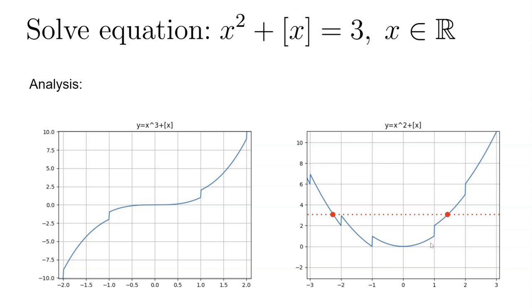But anyway, this graph gives us the idea that we cannot solve using the same method, just using a range of x and determining the integer part of x to simplify this equation. That doesn't work. So we have to figure out another way to solve this.